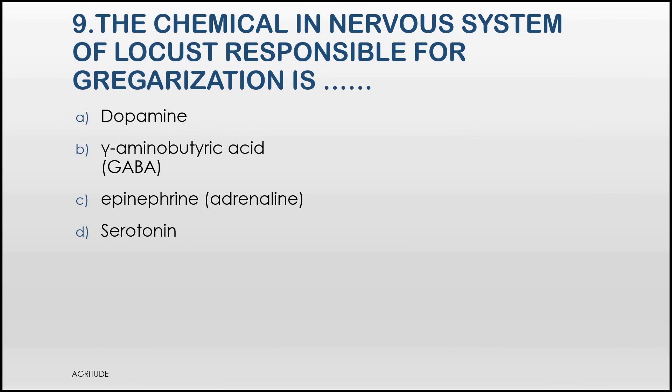And here comes the penultimate question. The chemical in nerve system of locusts responsible for gregarization is A. Dopamine, B. Gamma aminobutyric acid, C. Epinephrine, D. Serotonin.